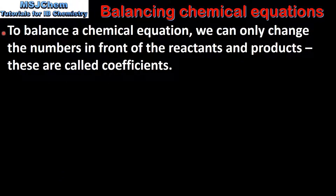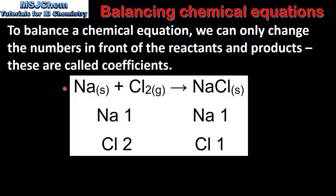To balance a chemical equation we can only change the numbers in front of the reactants and products. These are called coefficients. Next we look at an example.